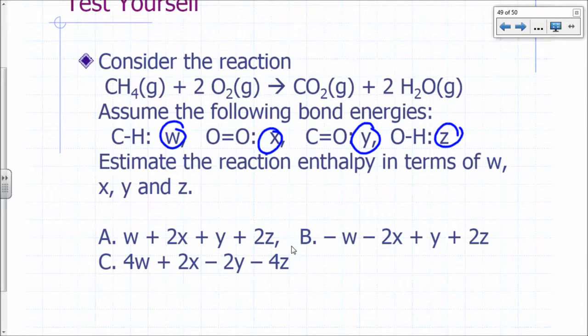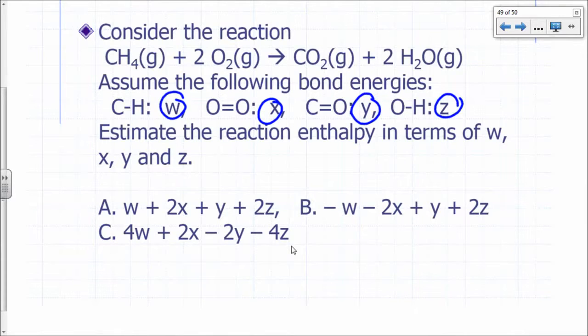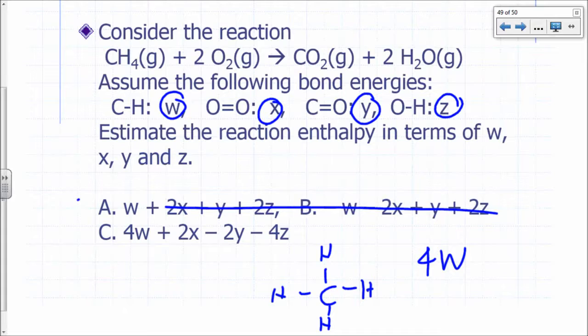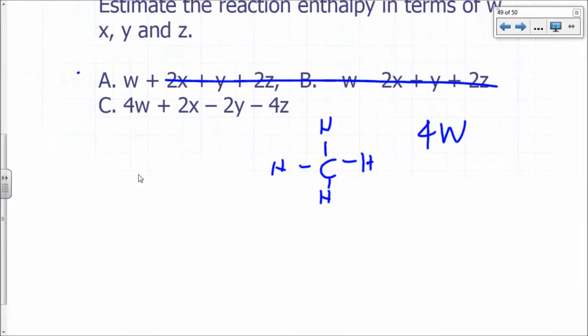Okay, so how many C-H bonds would you have to be breaking here? Four, right? Your methane is CH4. You have four C-H bonds. So your delta H will have to involve a term that says 4W, right? So you can eliminate choice A and B right away. But let's finish this up anyway. Let's verify that C is in fact correct.